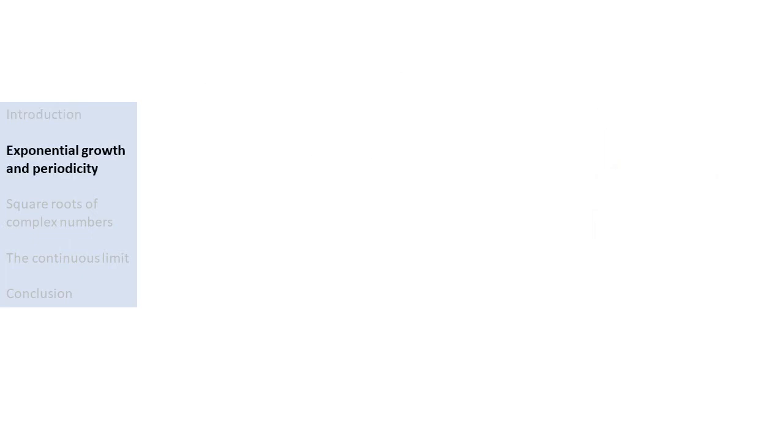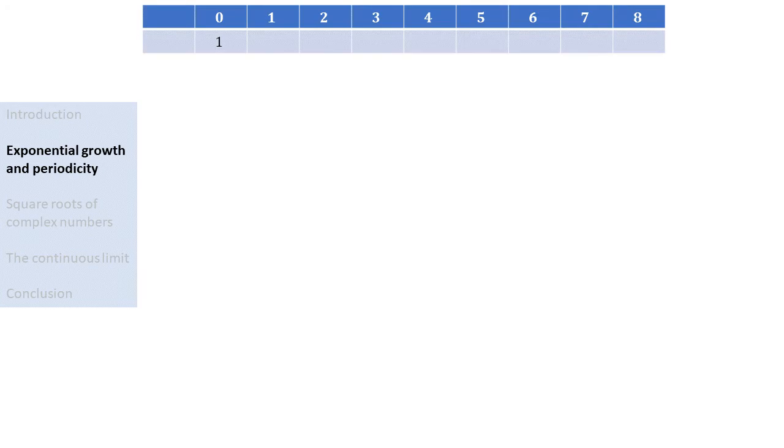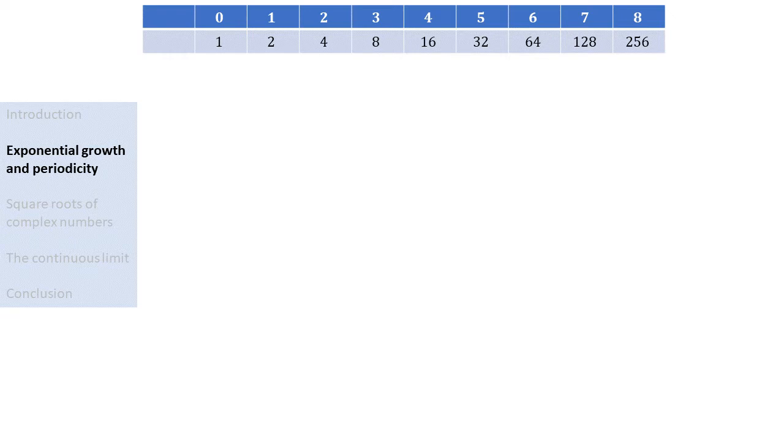Let's imagine a hypothetical scenario where a virus spreads through a population. On day 0, there is only one person that is infected. And every day, the number of infected people doubles. Then, after one day, two people will be infected. The next day there will be 4, then 8, then 16, then 32, then 64, 128, and 256. This exponential growth is described by the formula 2 to the power n, where n denotes the number of days.